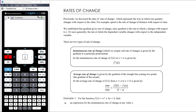We started off the previous topic by talking about rates of change and establishing that a rate of change is looking at how one quantity changes as another quantity changes. And that's essentially gradient. The rate of change is the gradient because gradient is how y changes as x changes — how the variable on the vertical axis changes as the variable on the horizontal axis changes.